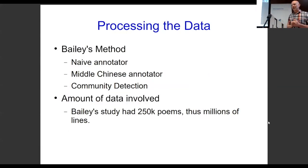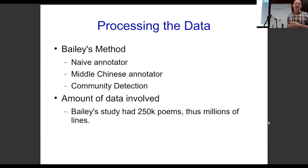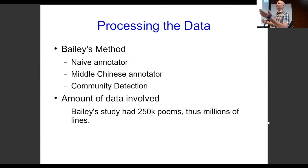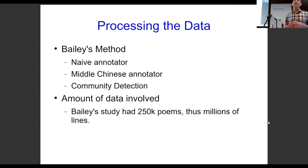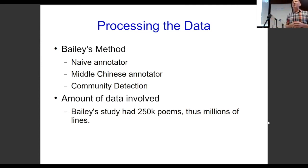Julian wrote a paper a few years back about applying network theory to Tang Dynasty and Song Dynasty poems, and he used this to create an annotator that would automatically annotate. His study had 250,000 poems, a lot of which have not been annotated. If you want to annotate 250,000 poems, you're talking about many years of time even with a large group of people, and you might be making all kinds of mistakes. So he came up with a way of automatically annotating these poems.